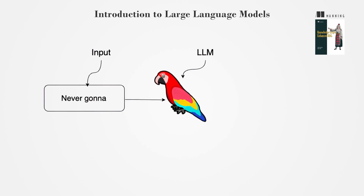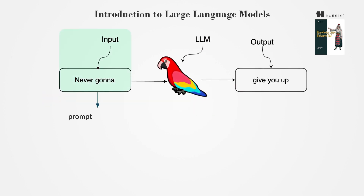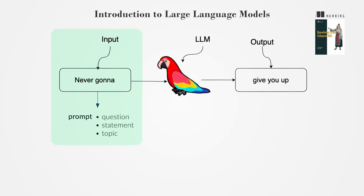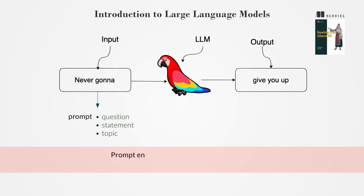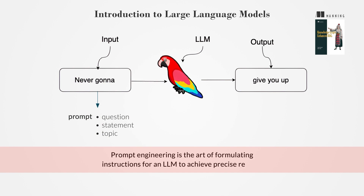LLMs can follow instructions and produce complex outputs like haikus. A prompt is the input text provided to the model, which can be a question, statement, or topic. Prompt engineering is the art of formulating instructions for an LLM to achieve precise results.